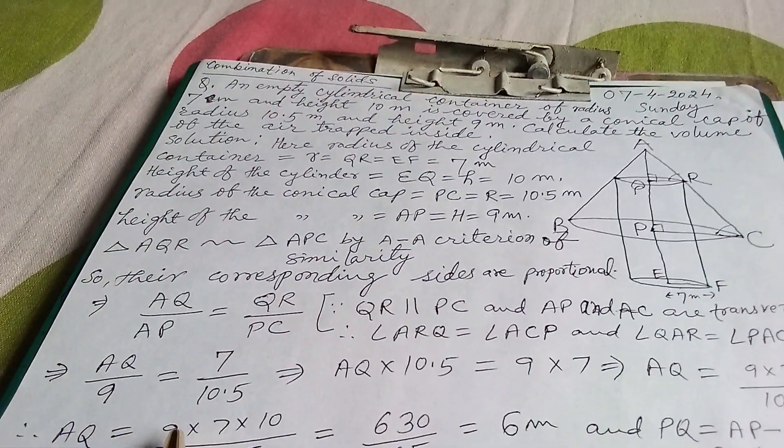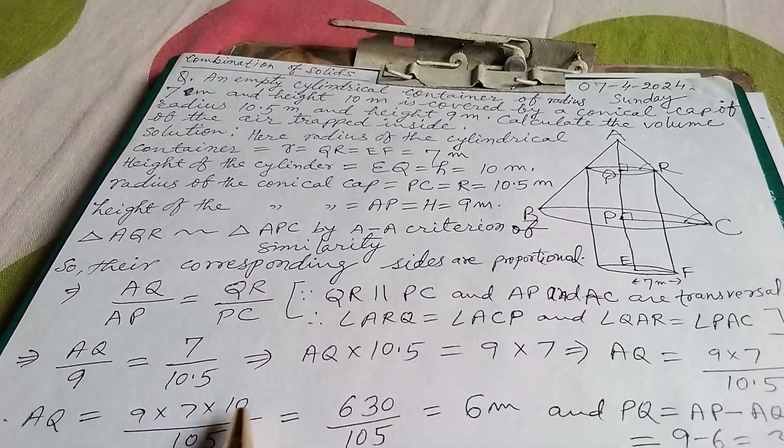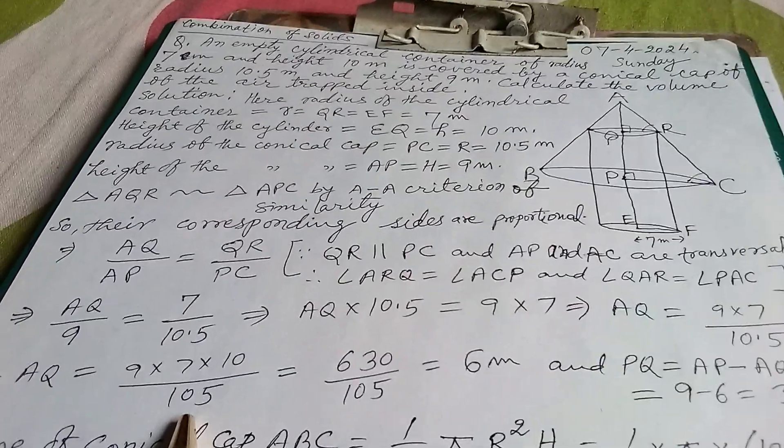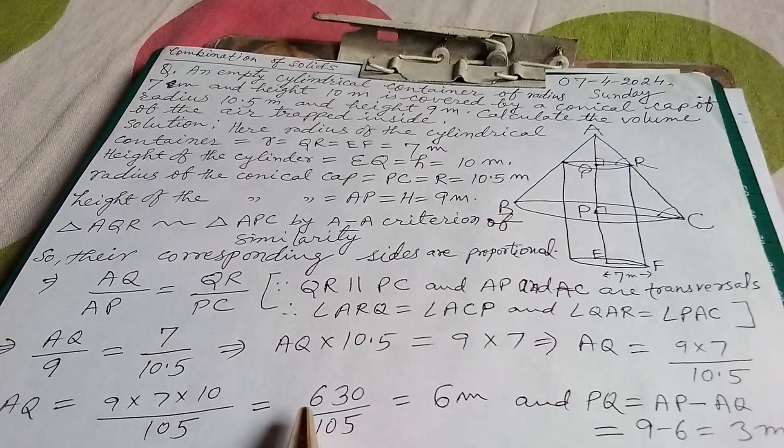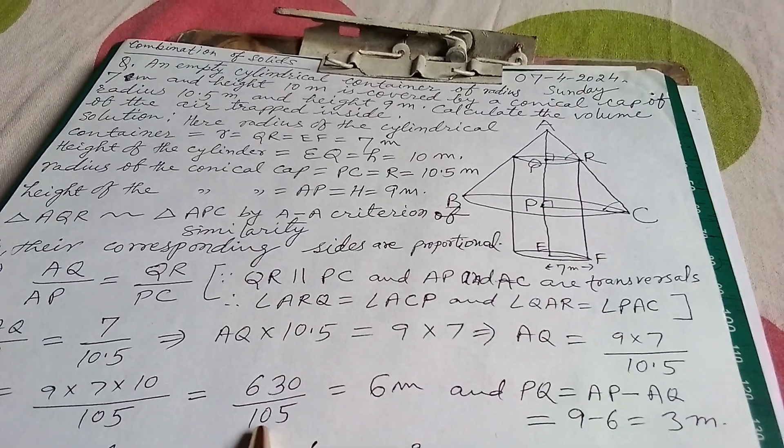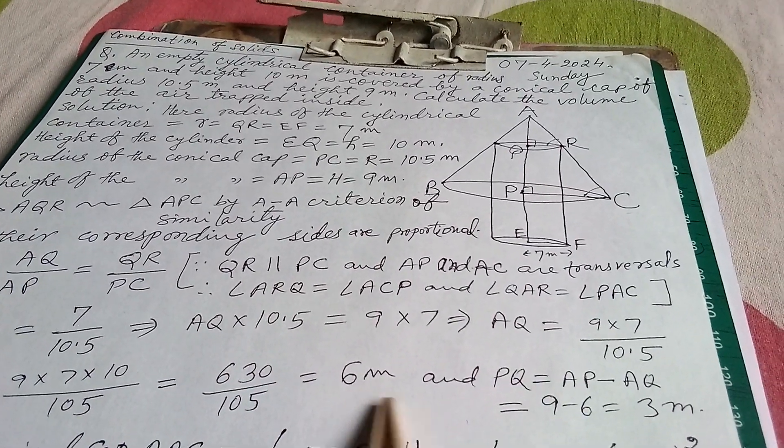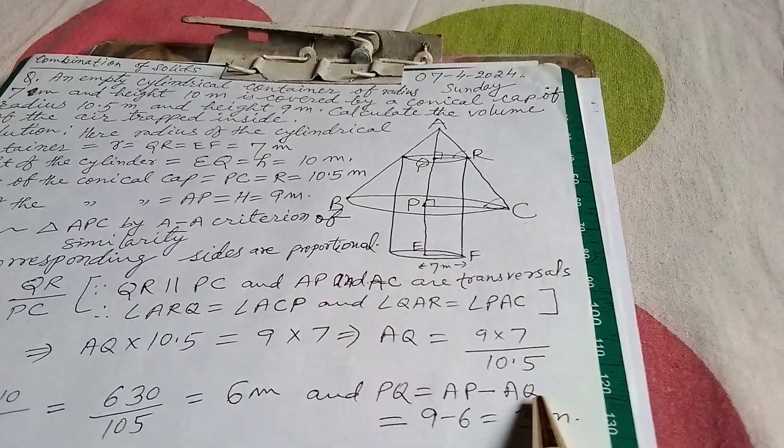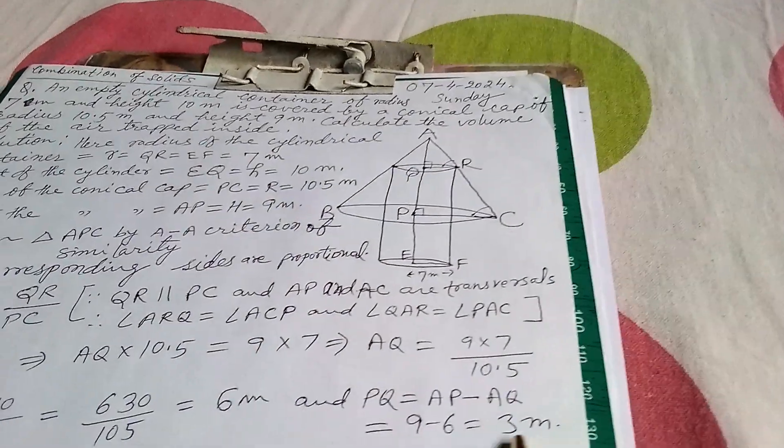Therefore AQ equals 9 times 10 by 10.5. After removing the decimal this 10 has come. So by multiplying we get 630 by 105 that equals 6 meter. And PQ equals AP minus AQ, that is 9 minus 6 equals 3 meter.